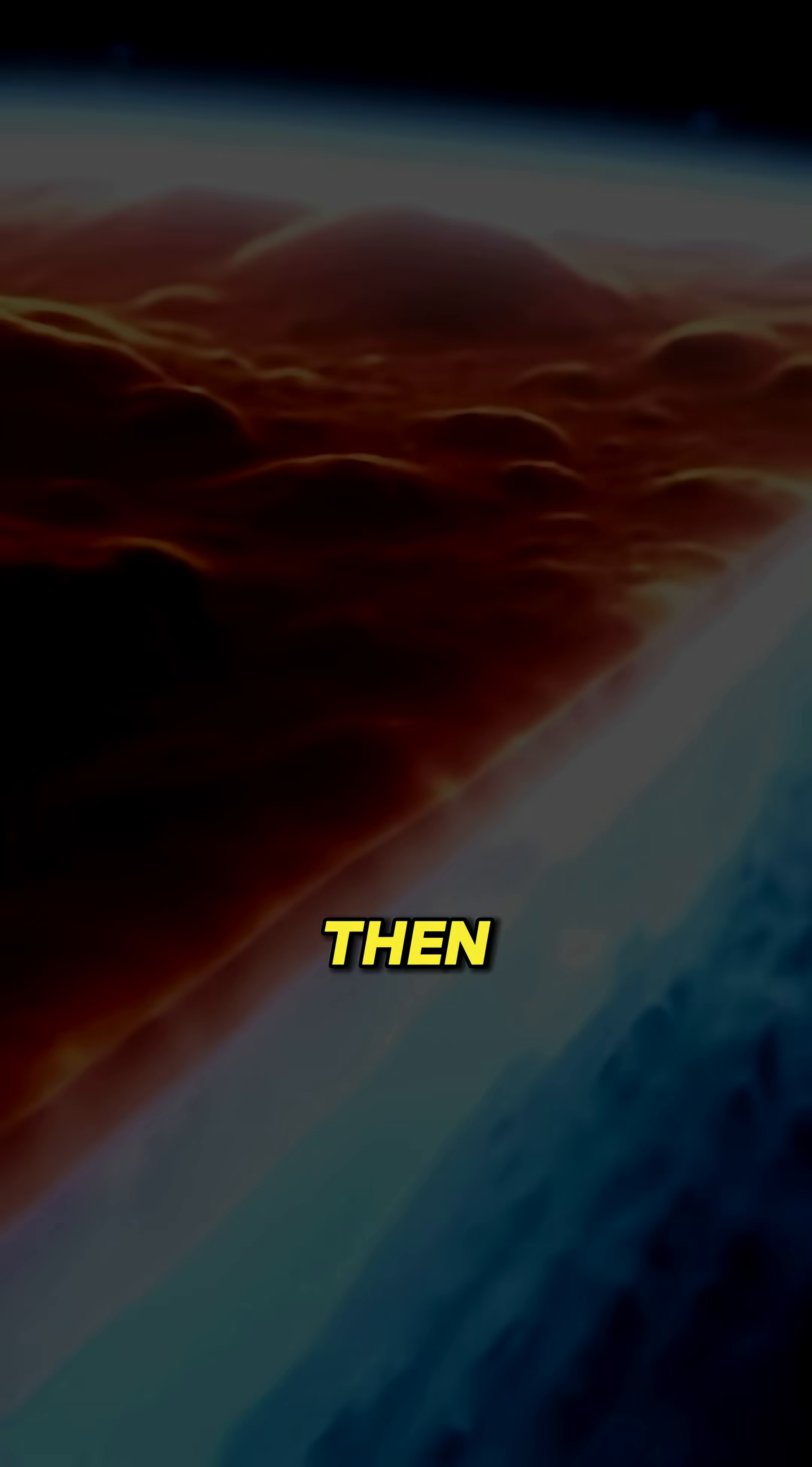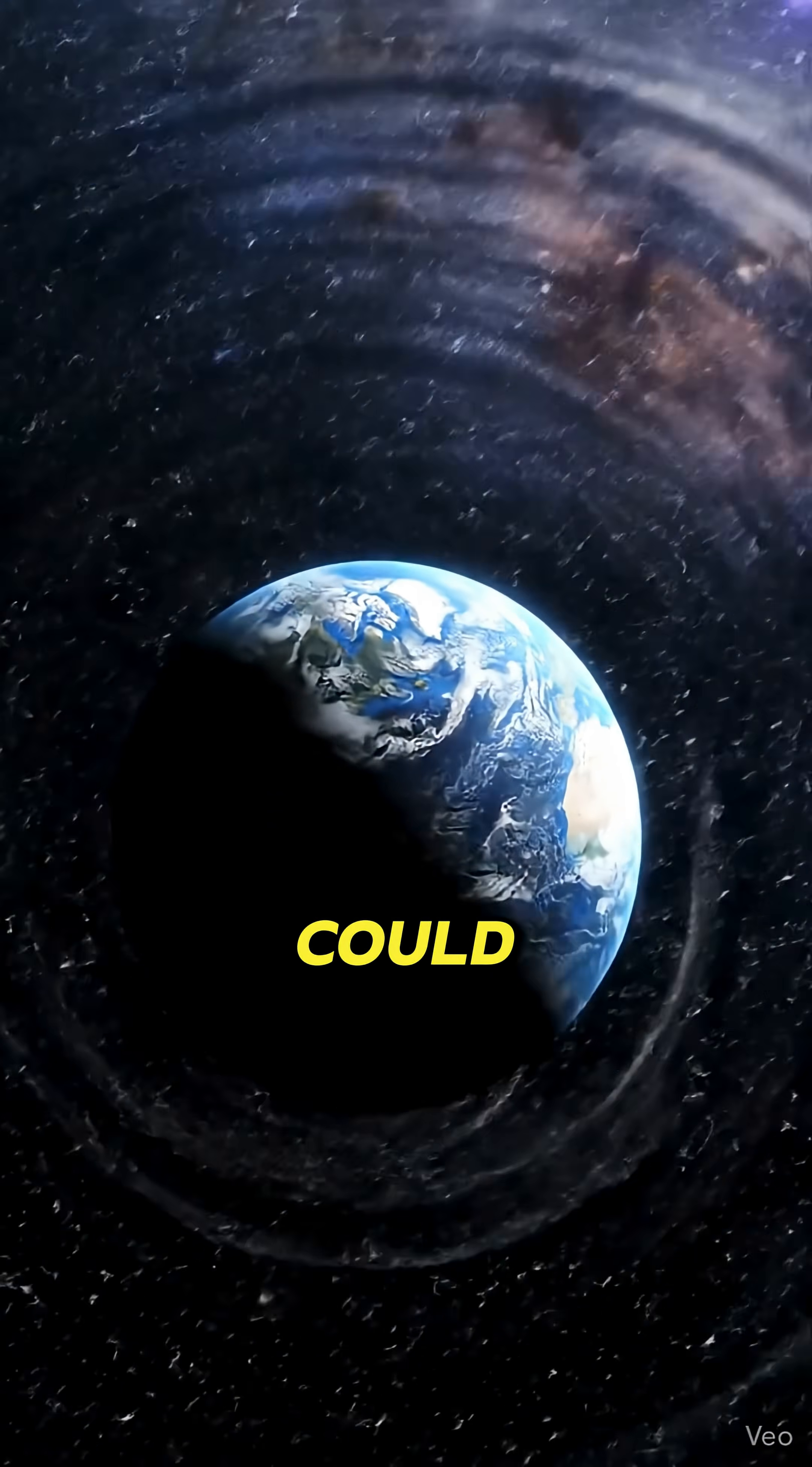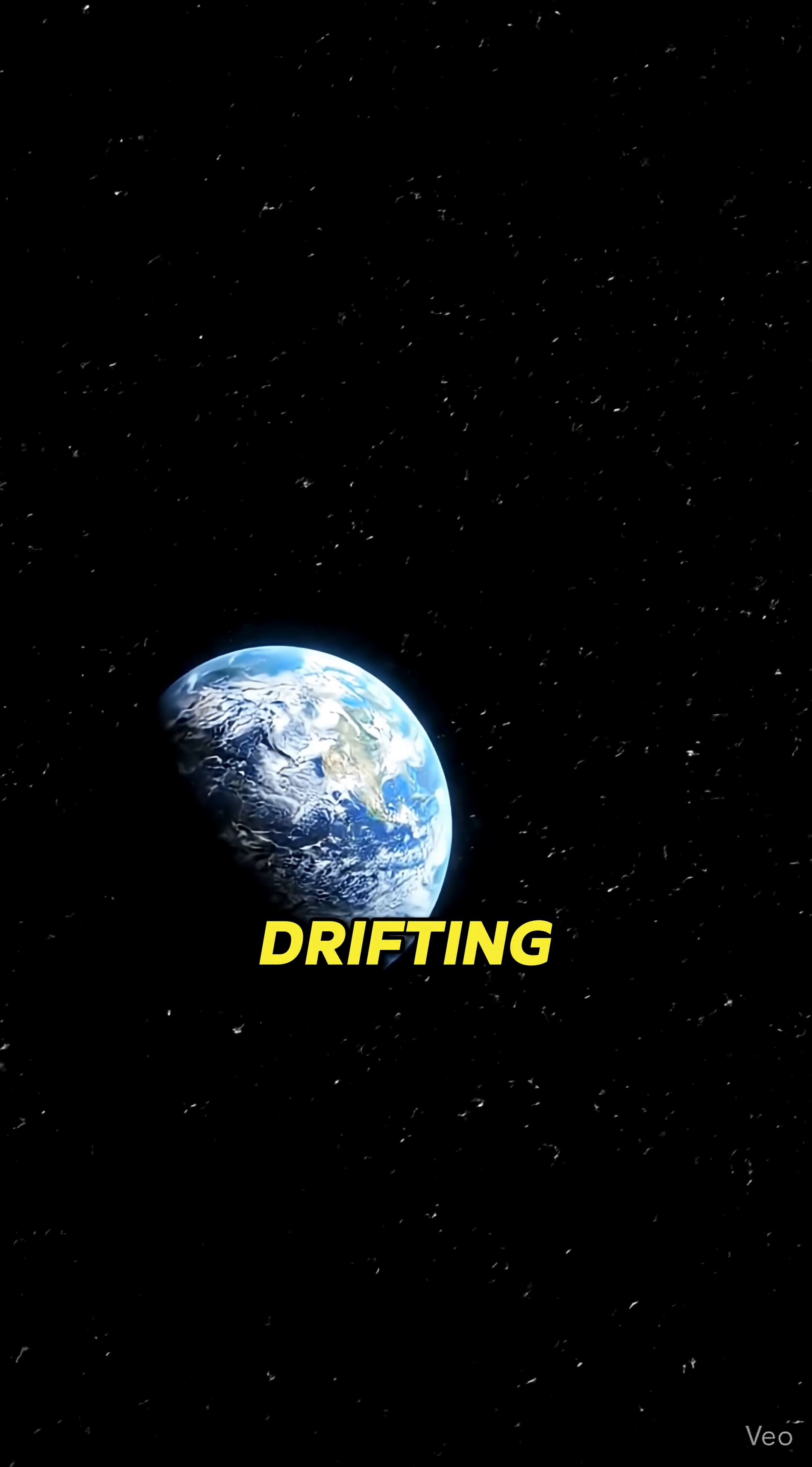And even then, our orbit would be a cosmic tightrope. One passing star, just one, could knock Earth off its path and send us drifting into darkness.